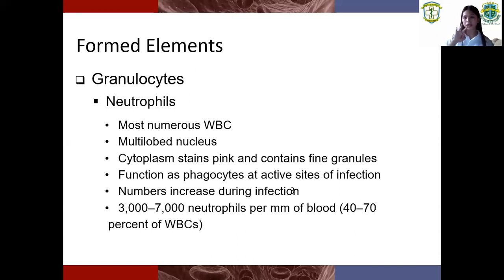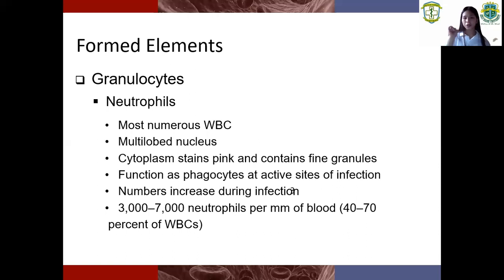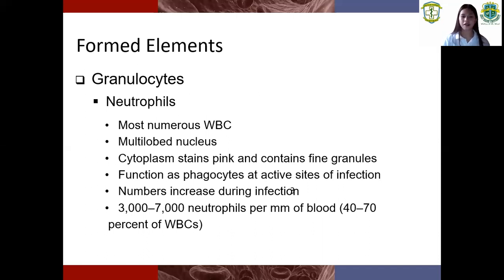So under granulocytes, there are three types of white blood cells. The first one is neutrophils, the second one is eosinophils, and the third one is basophils. Neutrophils help the body fight infection or bacterial. Eosinophils are involved in allergic reactions or cancer. Basophils detect and destroy some early cancer cells.